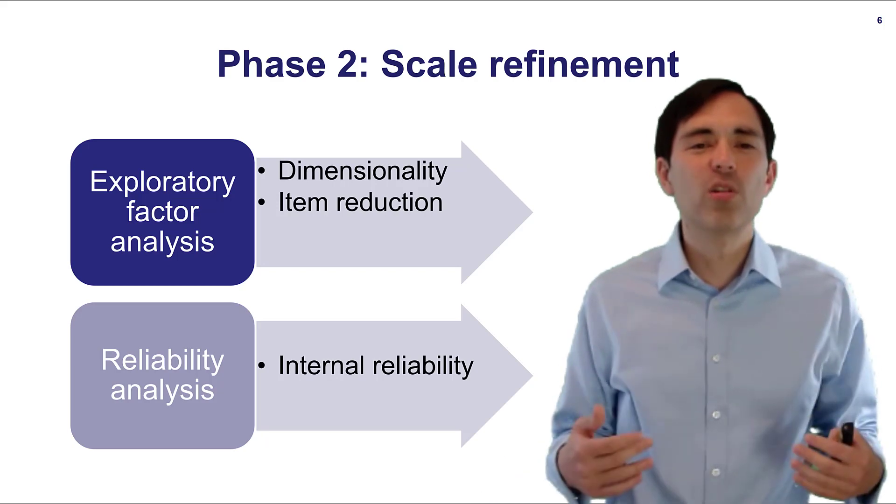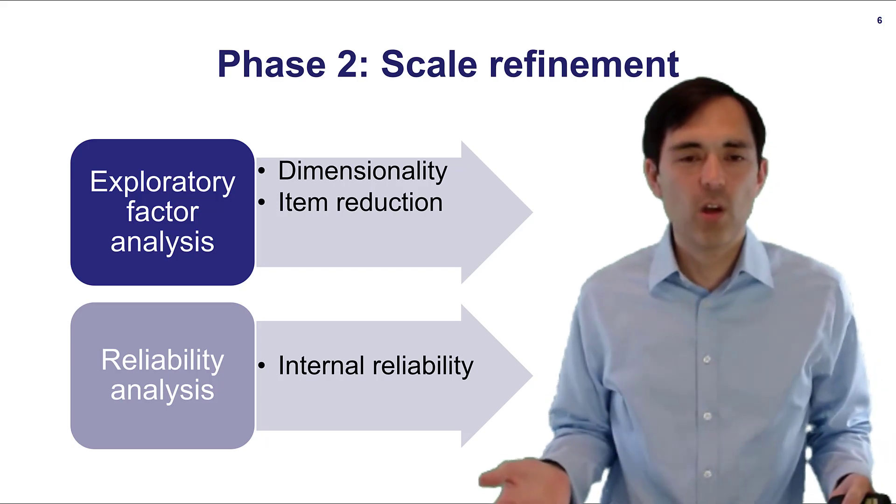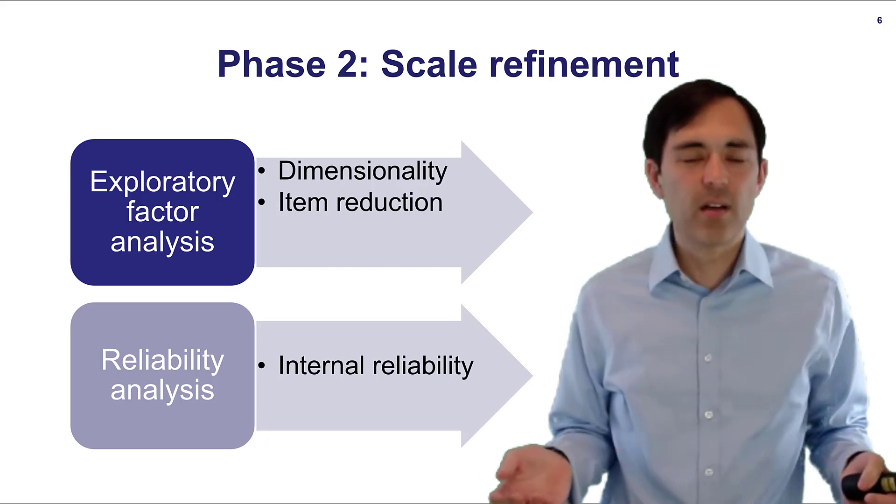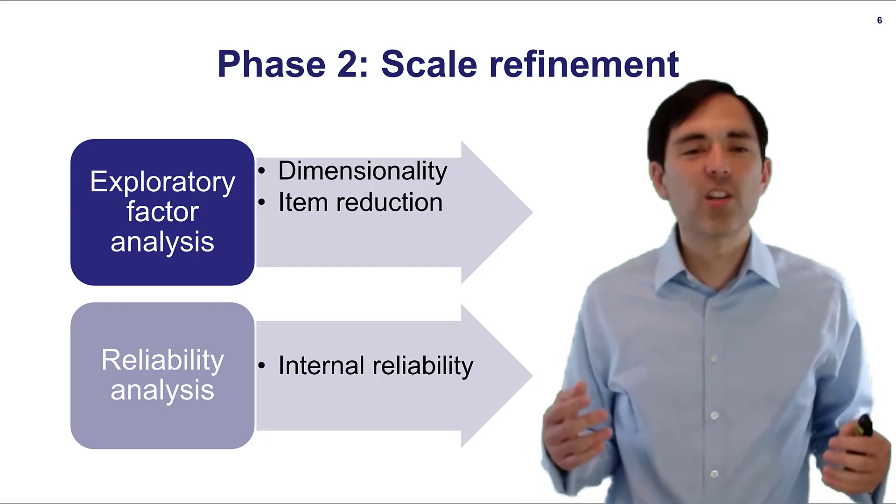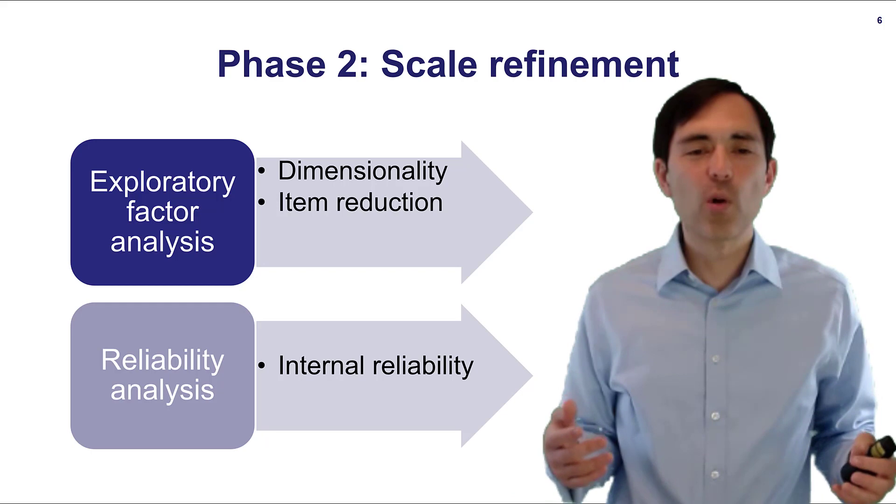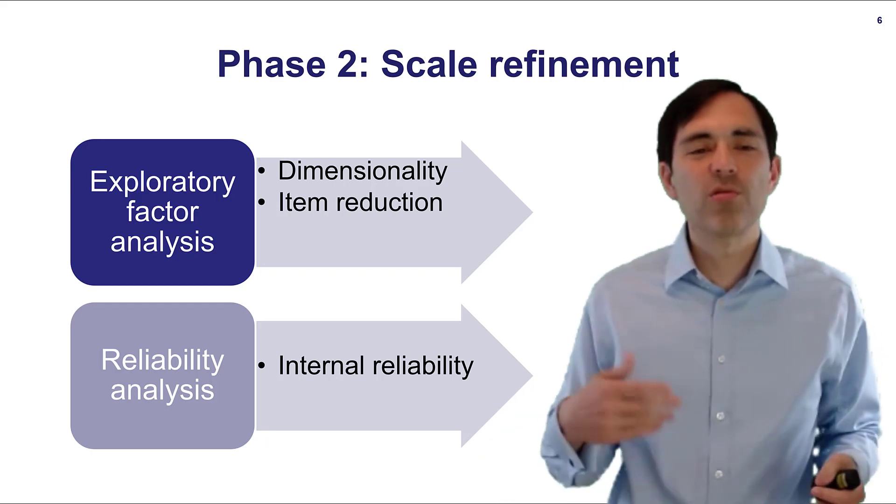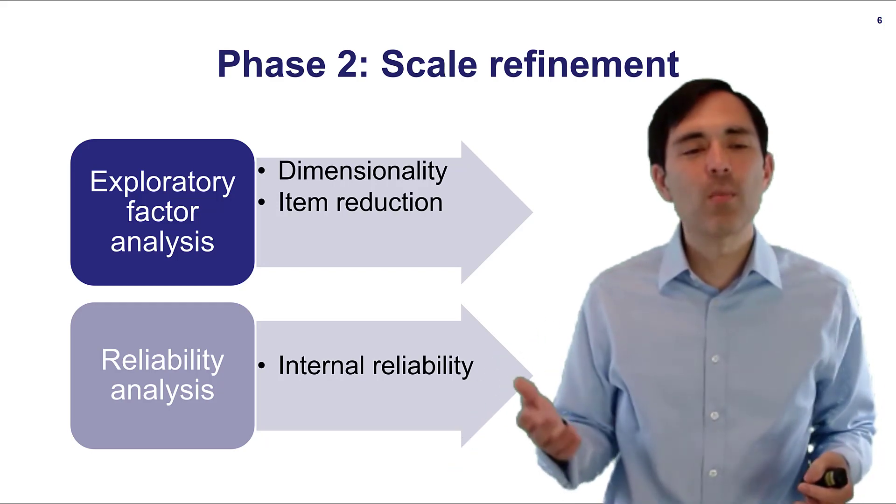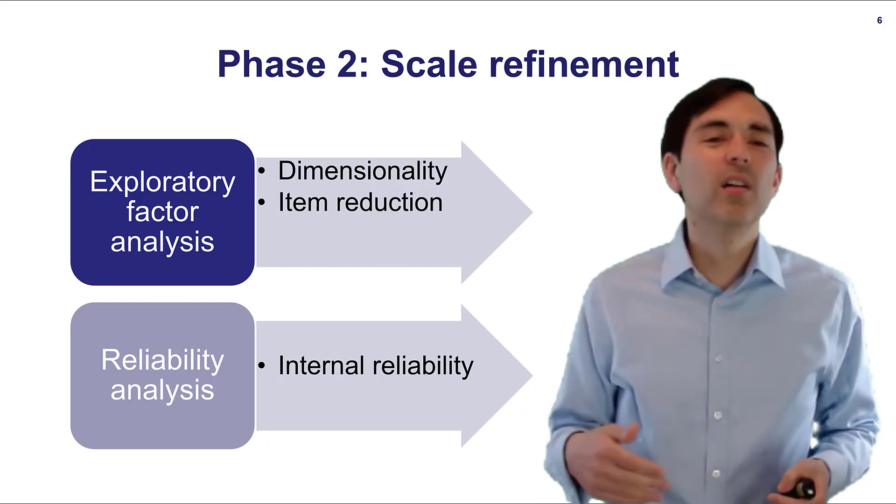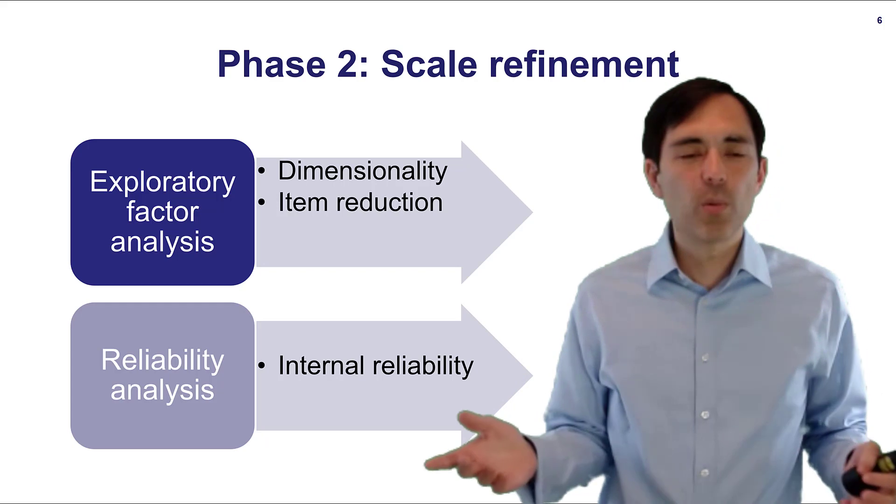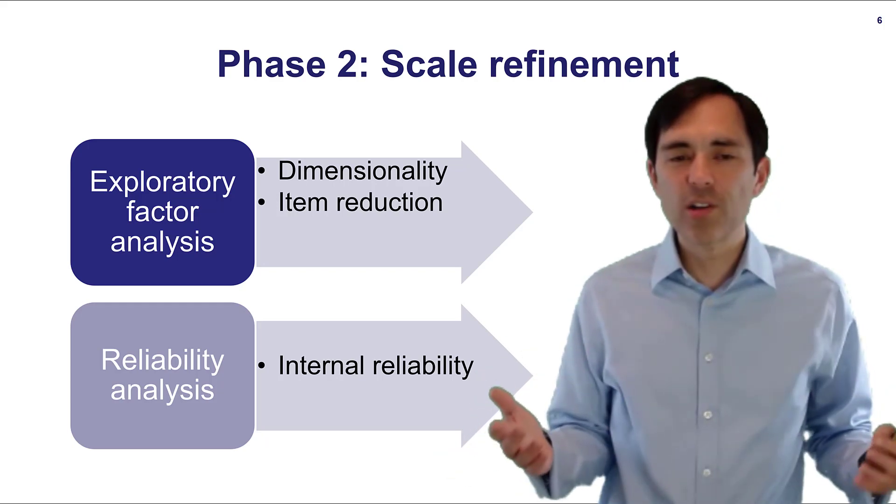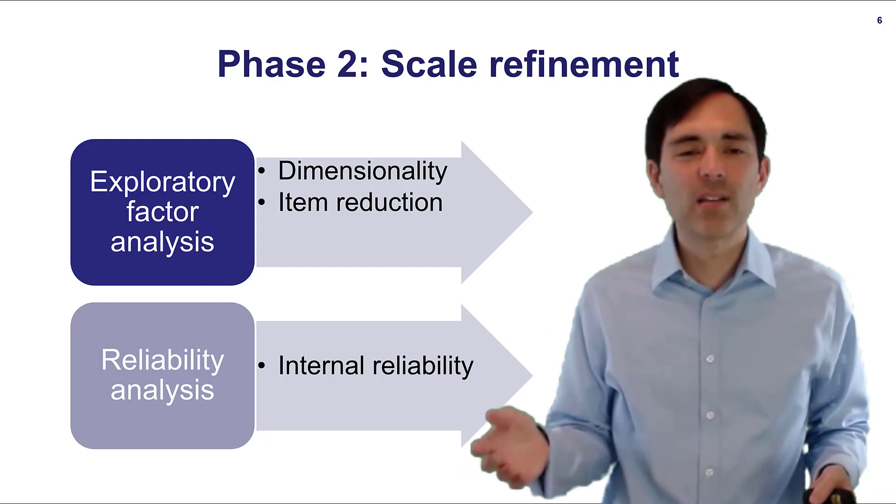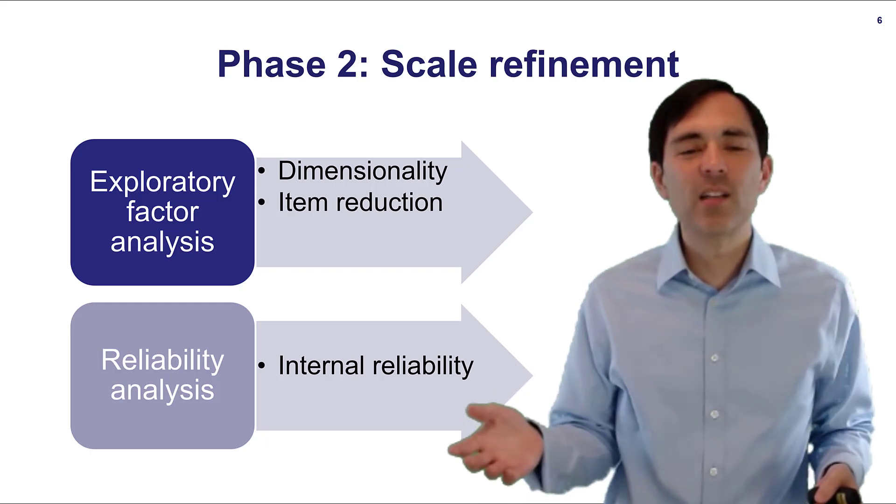Now I'm coming to phase number two. It's about scale refinement. What you would typically do is you would run an exploratory factor analysis. The objective is to check your dimensionality. If you have proposed three dimensions you would like to test through exploratory analysis whether indeed this analysis identifies three dimensions and then maybe also whether your items load on your proposed dimension and not on other dimensions. Typically we would run pilot study one on a sample of two to three hundred respondents and then run this exploratory factor analysis and check the dimensionality and reduce items.